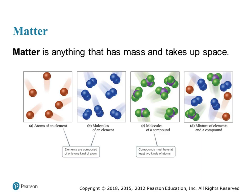Then we have compounds. Compounds, as shown in box C, are two or more different elements chemically combined. Because they are chemically put together, they can only be separated by chemical means. And in the last box, we have a picture of elements and compounds together forming a mixture.